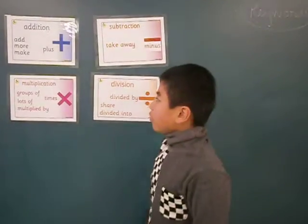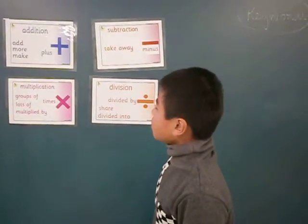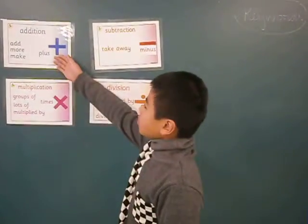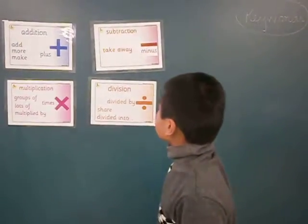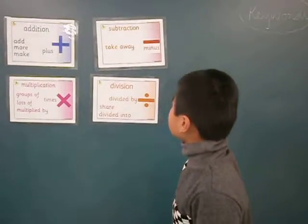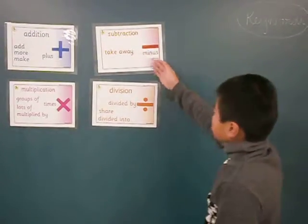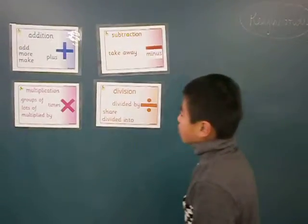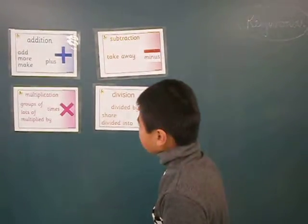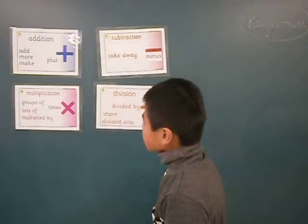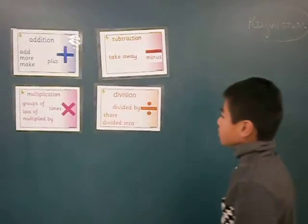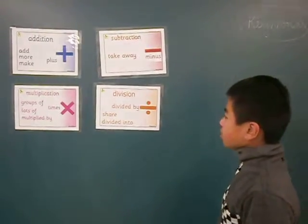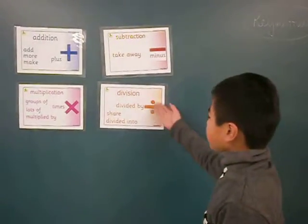For addition we are going to use plus. For subtraction we are going to use minus. For multiplication we are going to use times. And for division we are going to use divided by.